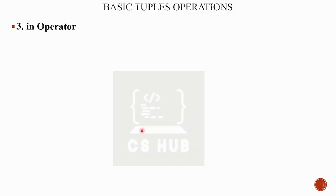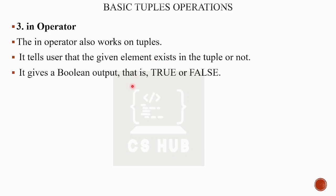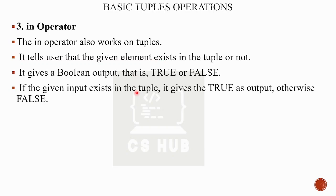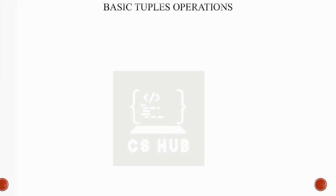The 'in' operator also works on tuples. It tells us whether a given item exists in the tuple or not — returning a Boolean value, true or false. For example, tuple = (10, 20, 30, 40). If we check '20 in tuple', the result is True. If we check '50 in tuple', the result is False.